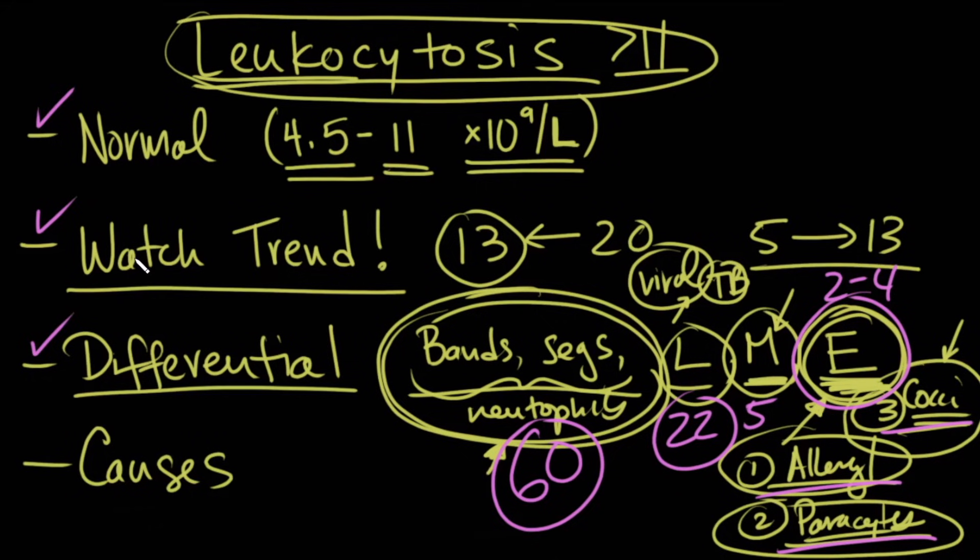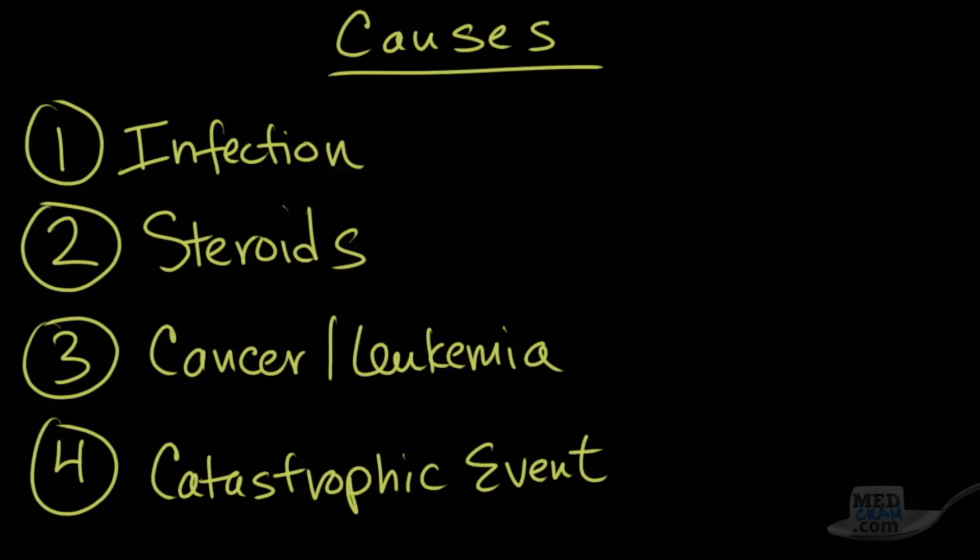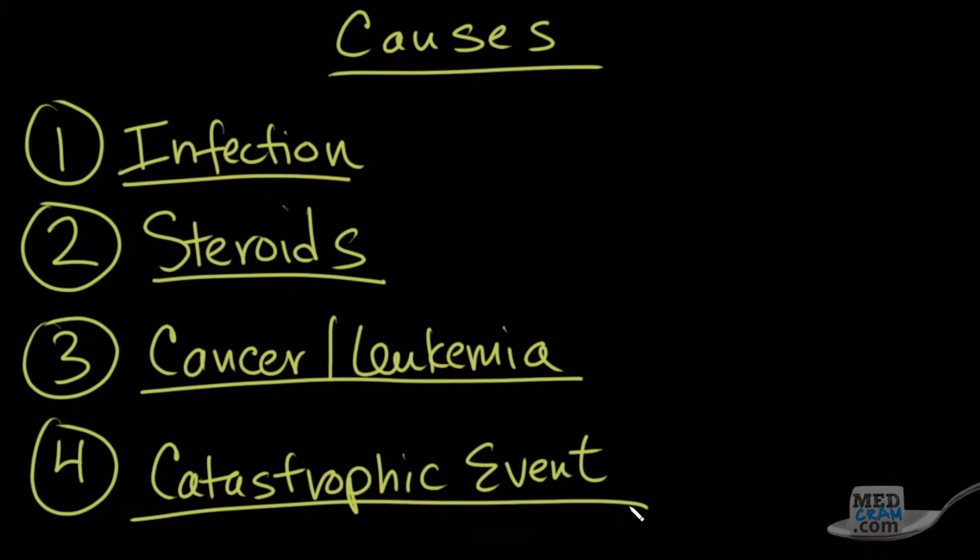So we talked about what's normal, watching the trend, and the differential. Let's talk about causes and what to do if the white count starts going up on a patient in the hospital. In terms of causes, the big four that I want you to know are infection, steroids, cancer/leukemia, or a catastrophic event. These are kind of listed in order of the most common.